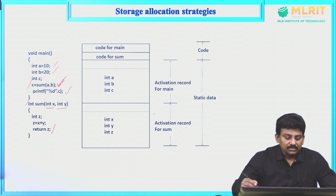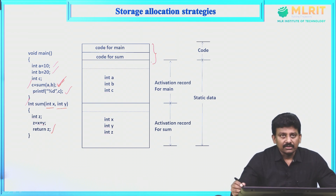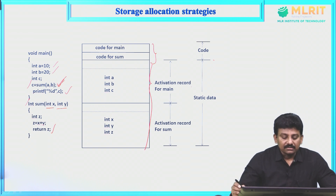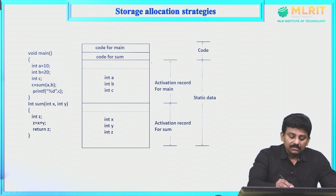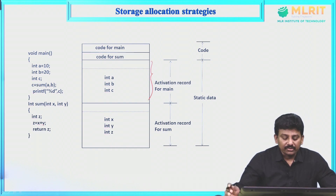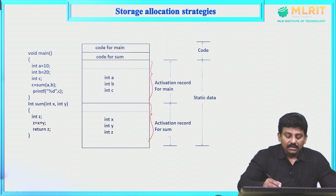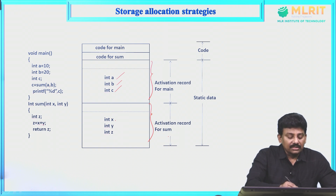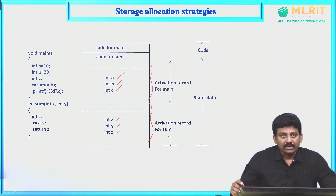In this diagram, the first segment of memory is reserved for code for main and sum. The next part is called static data. This is the activation record for the main program and this portion is the activation record for sum. The activation record for main contains static data like integers a, b, and c. The activation record for sum contains data about x, y, z of type integer.